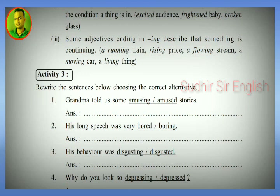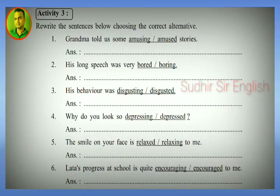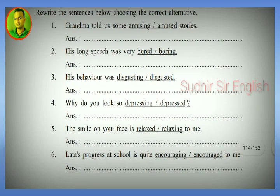Activity three. Read the sentences below choosing the correct alternative. Number one: 'The story was amusing/amused' — answer: amusing. Number two: 'His long speech was boring' — boring. Number three: 'His behaviour was disgusting' — disgusting. Number four: 'Why do you look so depressing/depressed?' — answer: depressed.